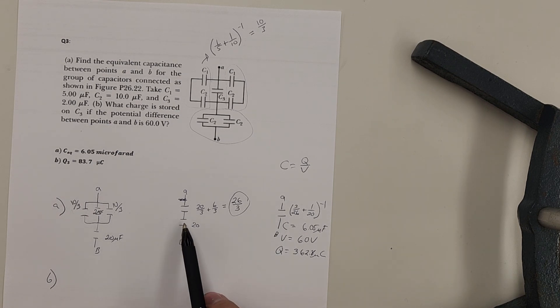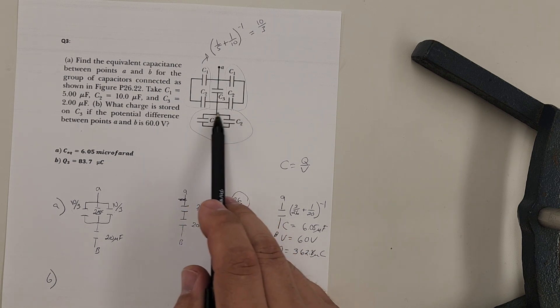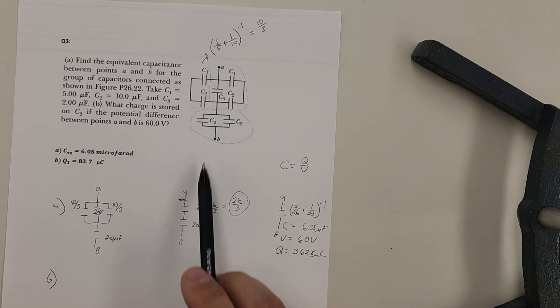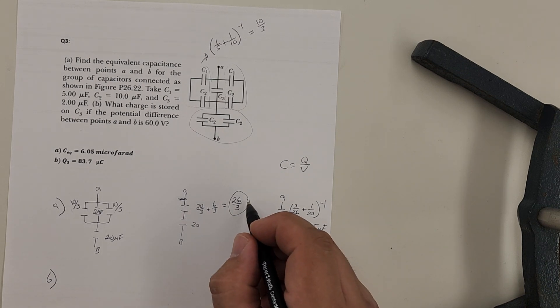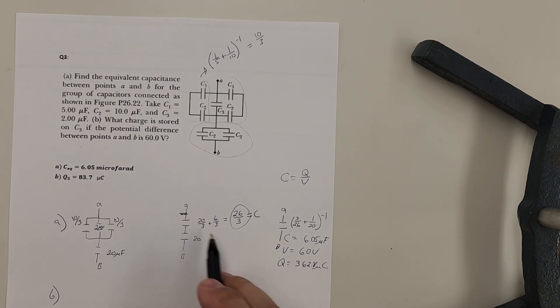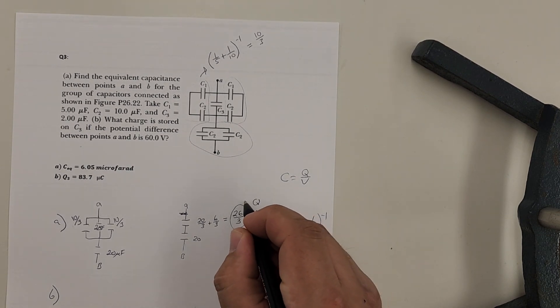And we see that this charge came from something being in series, which means the Q is the same on both of these. Now I don't really care too much on the 20 because I know that that 20 came from combining these. I'm not interested in that. I want to go back to the C3. So I'm only interested on the first one. I know that that was the capacitance that I had found based on that. And I know that this Q will transfer up there.